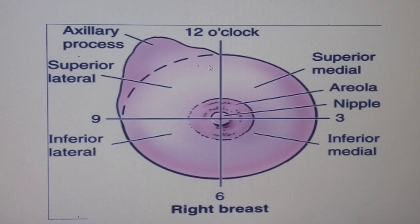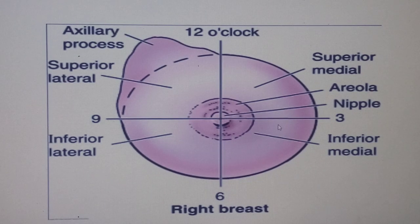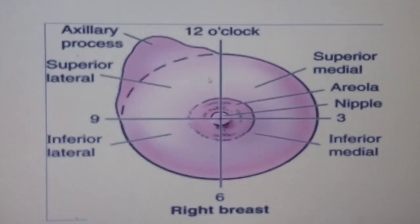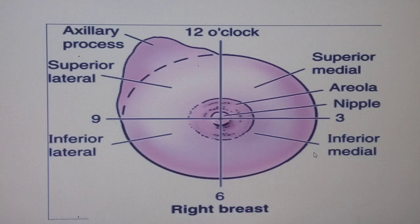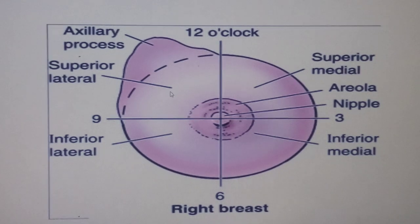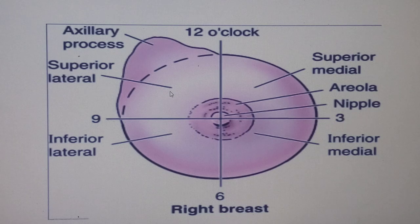If you look at the breast as a clock face and divide it into four quadrants: toward the sternum we have the medial quadrant, and toward the axilla (the armpits) we have the lateral part. Dividing further, we get the upper medial quadrant, the inferior lower medial quadrant, the lower lateral quadrant, and the upper lateral quadrant.